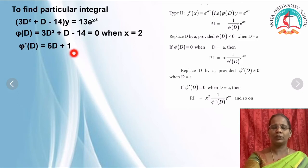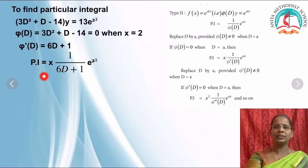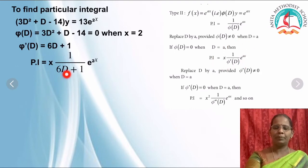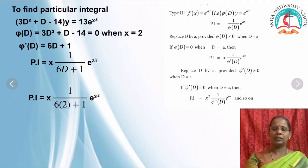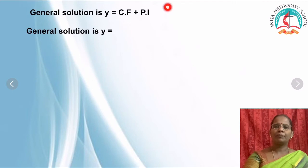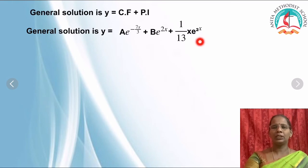Since φ(D) = 0, differentiate: d/dD of (3D² + D) = 6D + 1. So the particular integral becomes x · [1/(6D+1)] · e^(2x). Now substitute D = 2: 6(2) + 1 = 13. Therefore the particular integral is x · (1/13) · e^(2x), which is (x/13)·e^(2x). The complete solution is y = CF + PI = A·e^(-7/3·x) + B·e^(2x) + (x/13)·e^(2x).